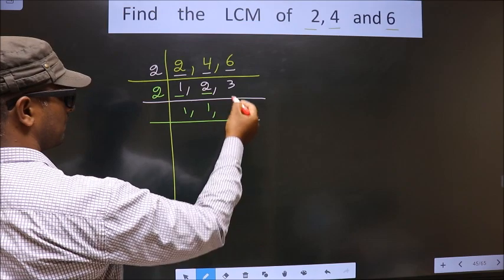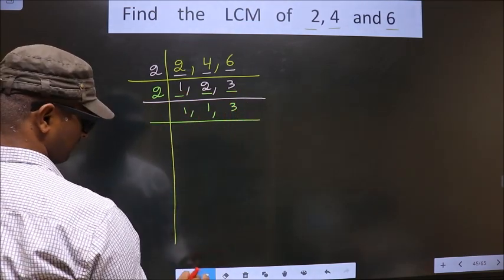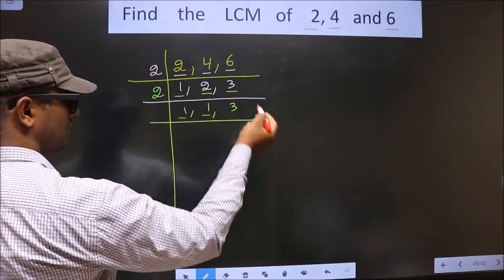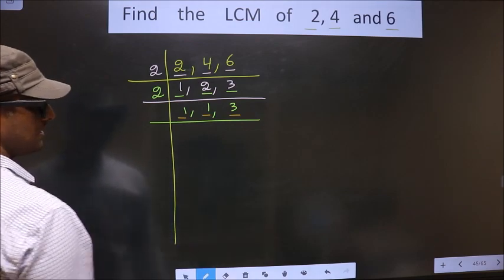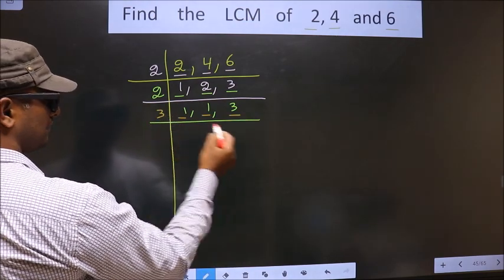The other number is 3. 3 is not divisible by 2, so you write down 3 as it is. Now we got 1 here, 1 here, so now you focus on the other number, that is 3. 3 is the prime number, so we take 3, 1 is 3.